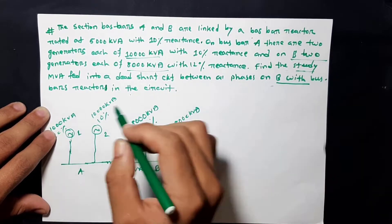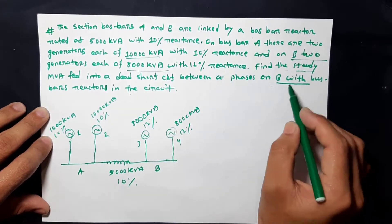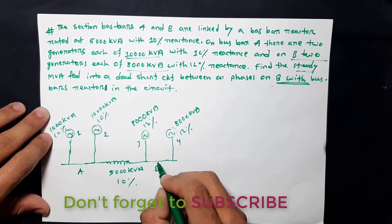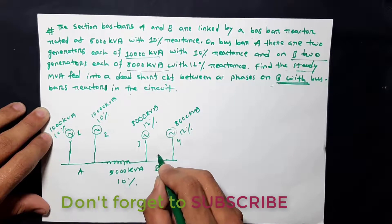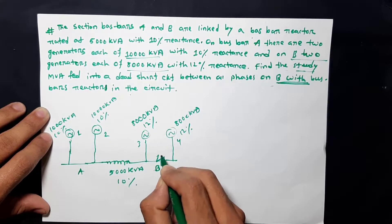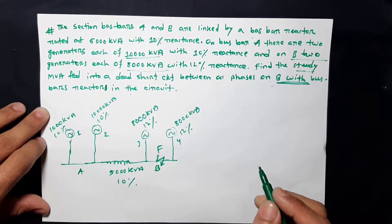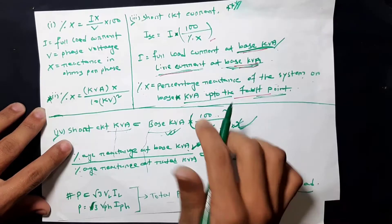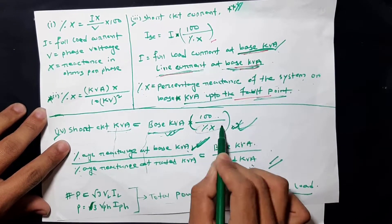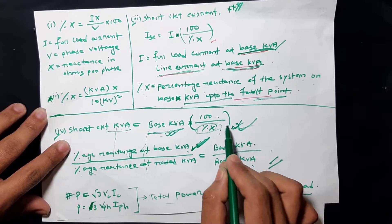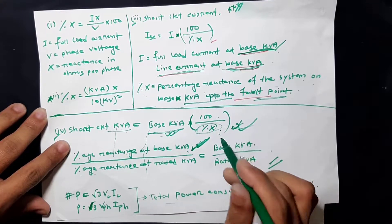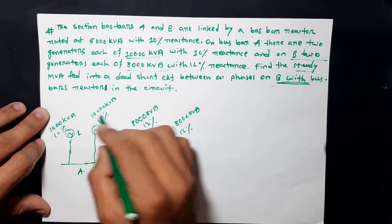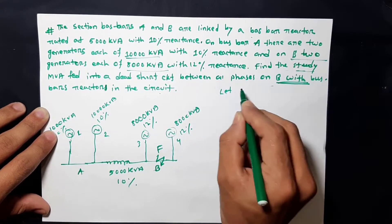We need to find the steady-state MVA for a dead short circuit between all phases on bus bar B — that means the fault is at that point. To do this, first we select the base KVA of the system, then calculate the percentage reactance of all elements referred to that base KVA up to the fault point.